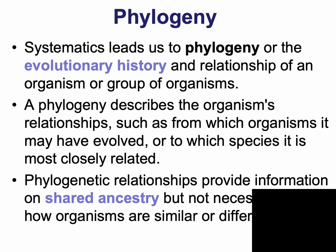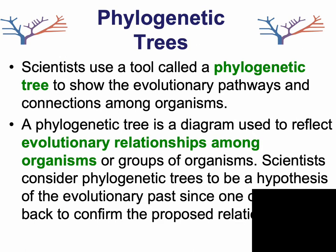Phylogeny describes an organism's evolutionary history and its evolutionary relatives based on shared ancestries. One of the tools that phylogeny uses are phylogenetic trees. The branches between organisms on these trees show evolutionary relationships — the more branches you share with another organism, the more closely related you are evolutionarily. And again, we're going to come back to this.